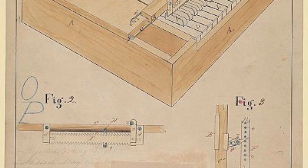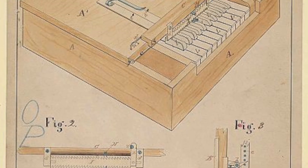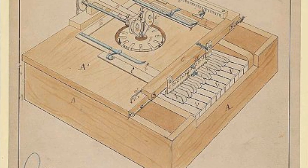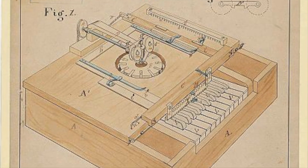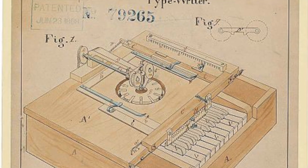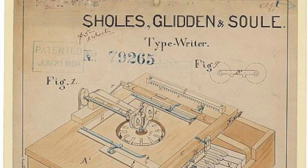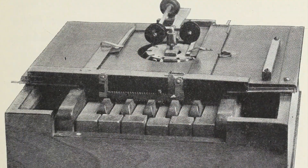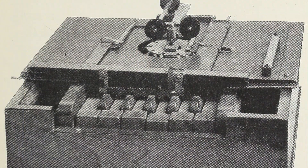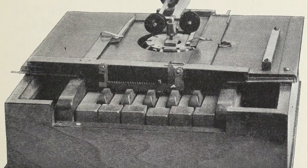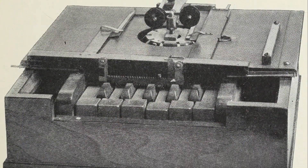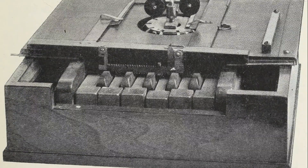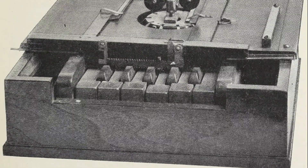The early typewriters, however, had a significant problem. The mechanical arms, or type bars, that struck the paper would often jam if adjacent keys were pressed in quick succession. This flaw necessitated a solution to improve the machine's functionality and reliability.